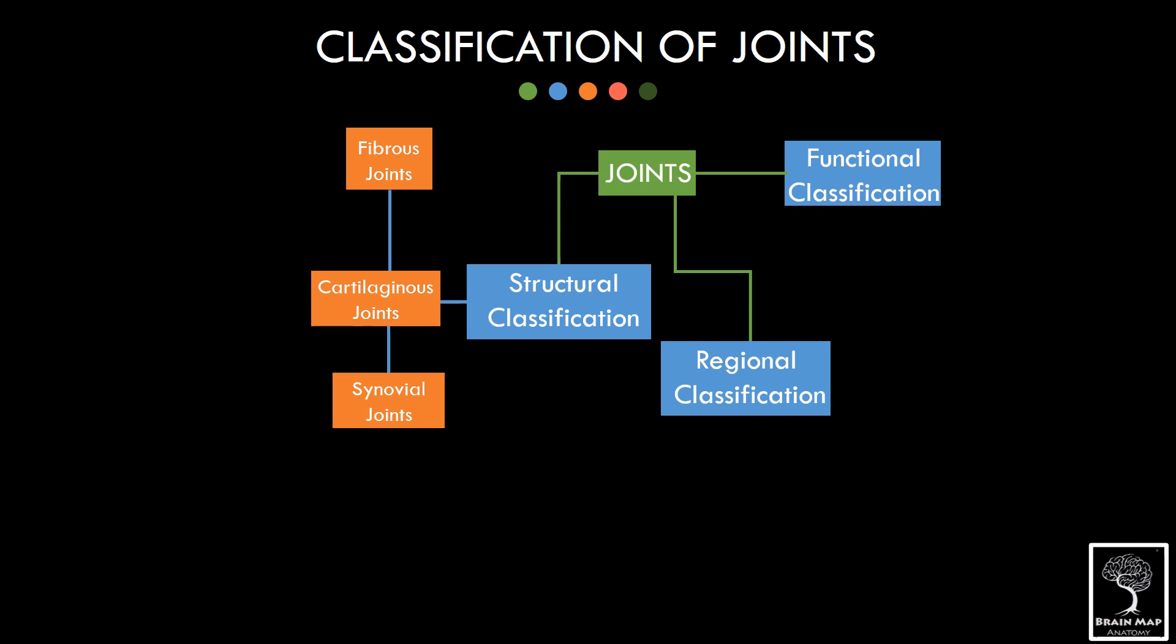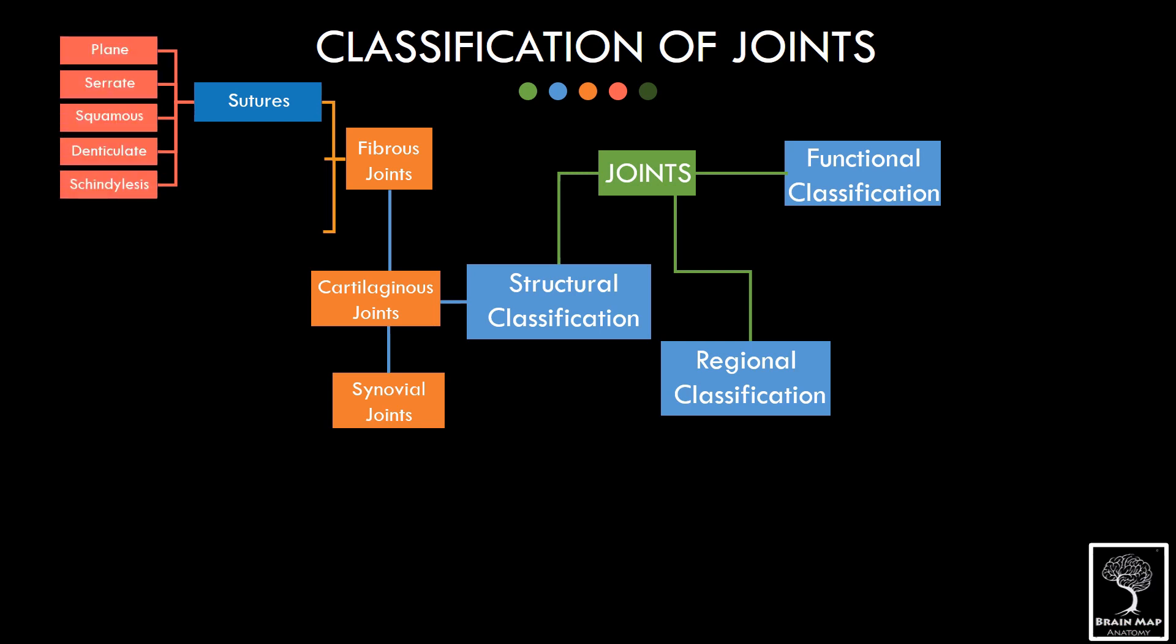The fibrous joints can be further divided into three, in which we will see the sutural joints first. Five different varieties of sutures are seen in the skull: plain, serrate, squamous, denticulate, and schenolesis sutures.